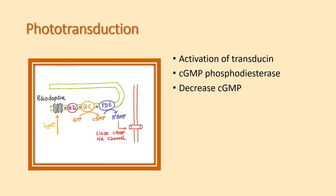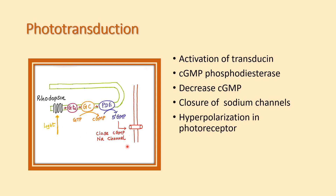As a result, the membrane potential shifts from minus 40 millivolts to minus 70 millivolts — an increase in negativity. This is hyperpolarization of the photoreceptors. Notably, while other sensory receptors produce depolarization as their receptor potential, visual receptors produce hyperpolarization.